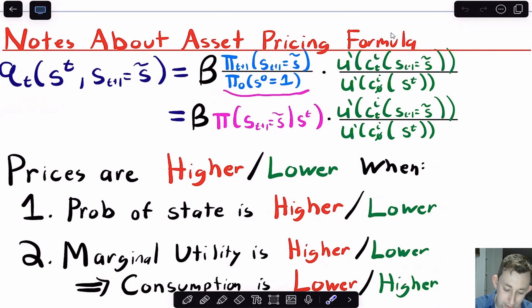And what I really want you to get out of this formula is a couple of things. First, when are prices higher? Well, prices are higher if there's a higher probability that it's going to be that state tomorrow. And of course, if the probability of that state happening is pretty low, you should expect that buying an asset for that state should also be pretty cheap. So that makes a lot of sense.